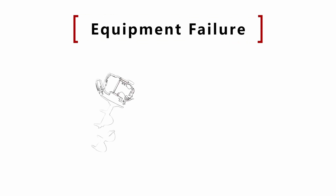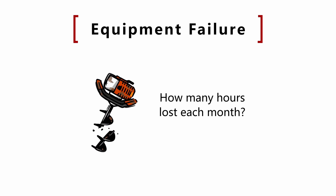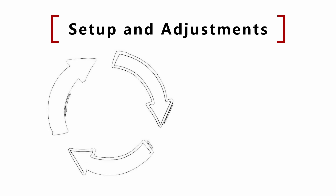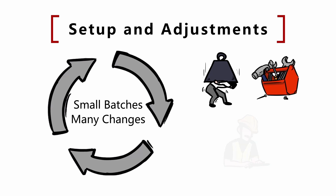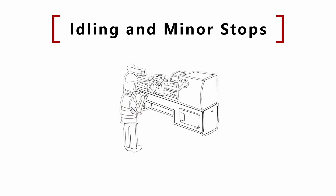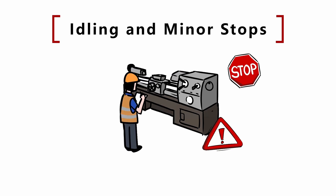Equipment failure: breakdown losses occur when a machine breaks down and maintenance needs to repair it. How many hours a month are lost for this reason? Setup and adjustments: today's world is characterized by high demand for differentiation and small batch sizes, requiring type changes several times a month — but how long does it take if molds are very heavy, there are many screws and bolts, and adjustments can only be done by an expert? Idling and minor stops: when pieces stop on a chute of an automatic machine, the operator solves it himself. The sum of these minor stops across several machines can lead to a large loss of production capacity at the end of a shift.